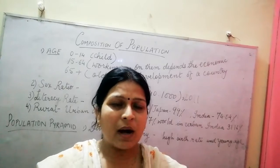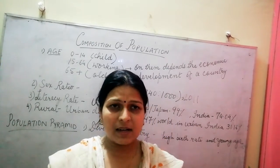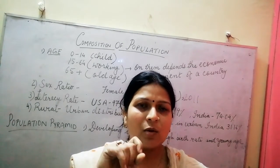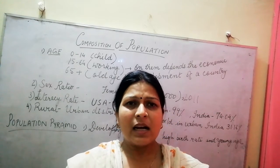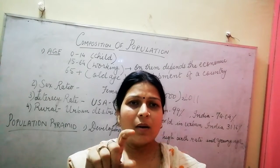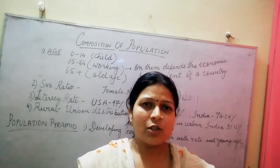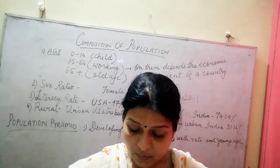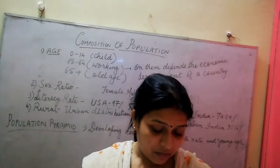In developing countries like India, birth rates have increased and the working population is large, while the old age population is smaller. The pyramid is shown with children at the bottom as horizontal bars, the working group in the middle, and old age population at the top. In developing countries, the pyramid is generally triangular in shape.